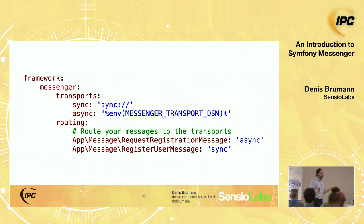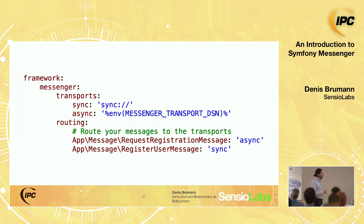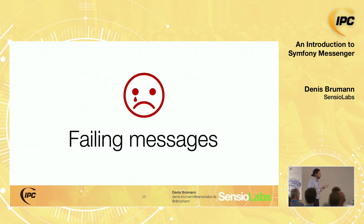You can use the same RabbitMQ DSN with different queue names, or have multiple connections — for example sending a message both to an async worker and additionally to another destination for logging. Instead of one string you can provide an array of transports to send the same message to multiple places. The routing is not decided by the bus but by you, based on the message class — so whatever bus you send it through, you route by message type.